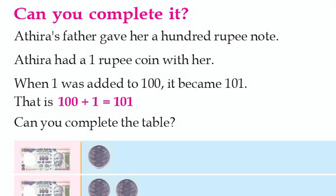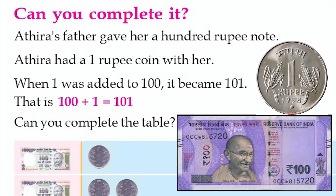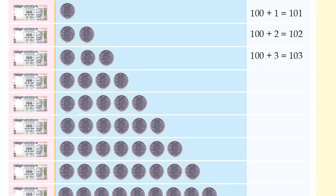Adira's father gave her a 100 rupee note. Adira also had a 1 rupee coin with her. When 1 was added to 100, it became 101. So 100 plus 1 equals 101.